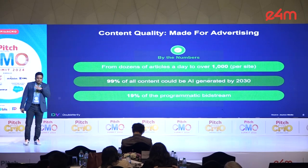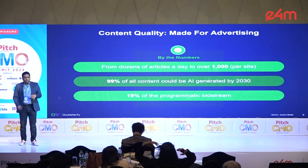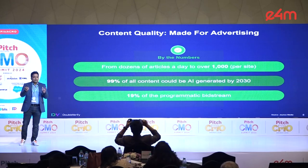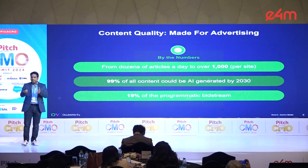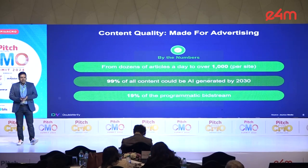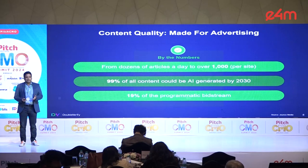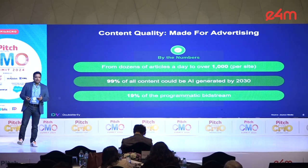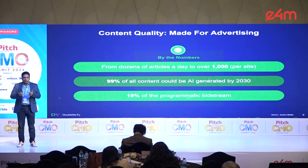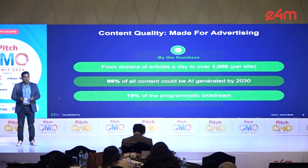A couple of years ago, there were dozens of articles on a website and it took significant time to create and upload each piece. With the help of AI, you can now literally create thousands of articles in the span of a minute. Look at the scale — if you have hundreds of thousands of websites each bringing in ten thousand pieces of content in a short span of time, imagine where the world is going. Estimates suggest about 99% of digital content will be AI-driven.